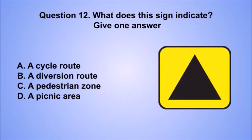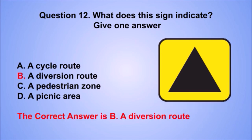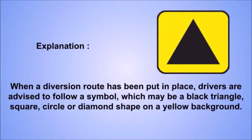Question 12. What does this sign indicate? The correct answer is B: A diversion route. When a diversion route has been put in place, drivers are advised to follow a symbol — which may be a black triangle, square, circle or diamond shape on a yellow background.